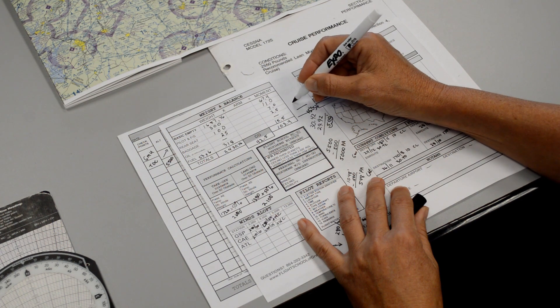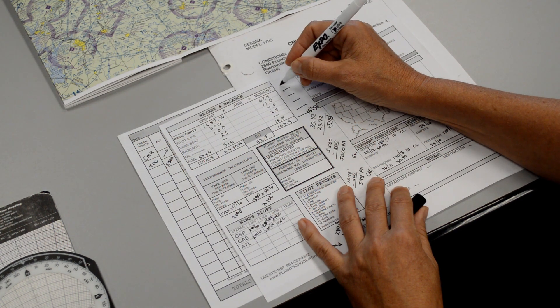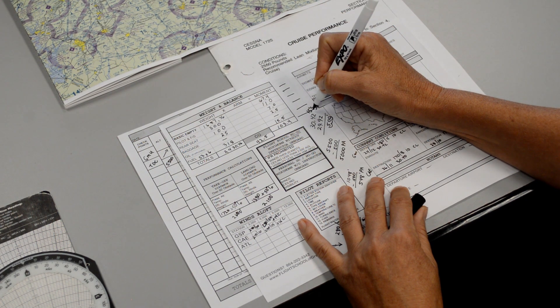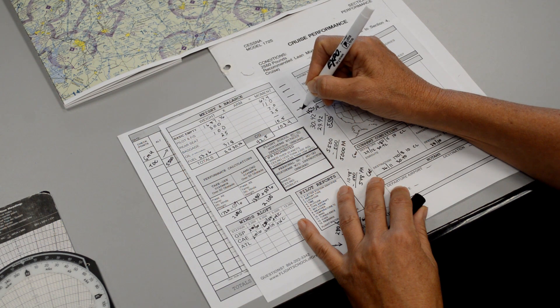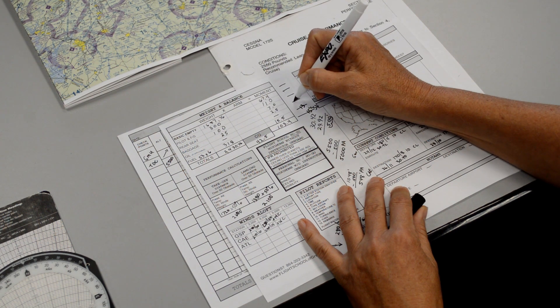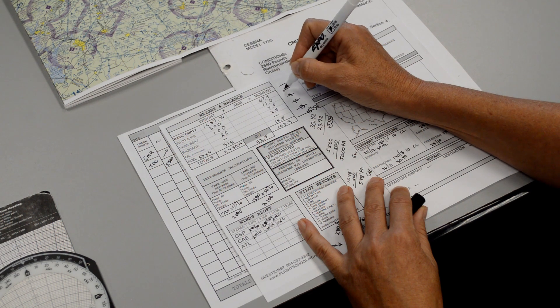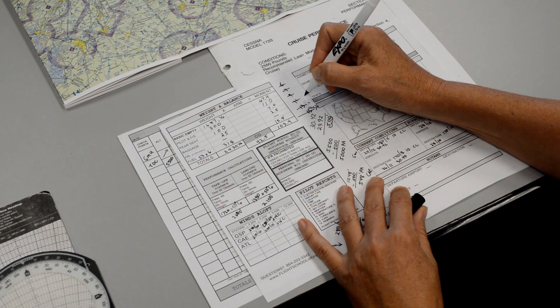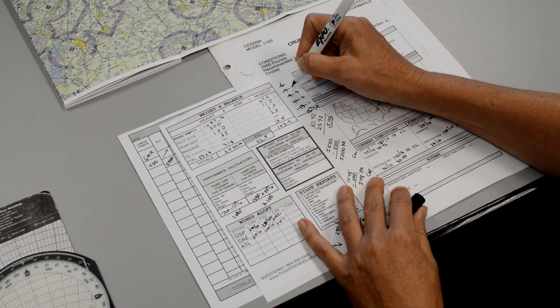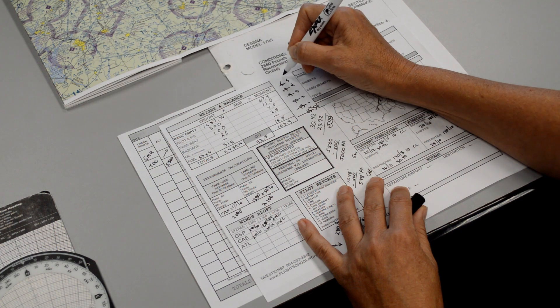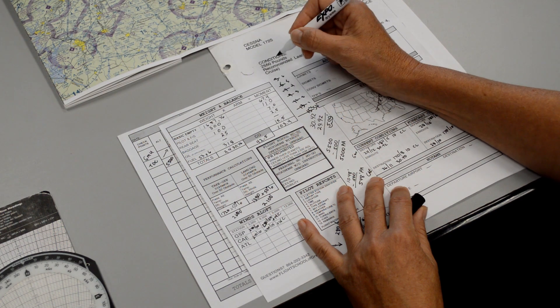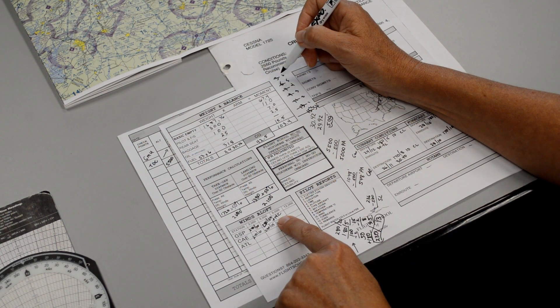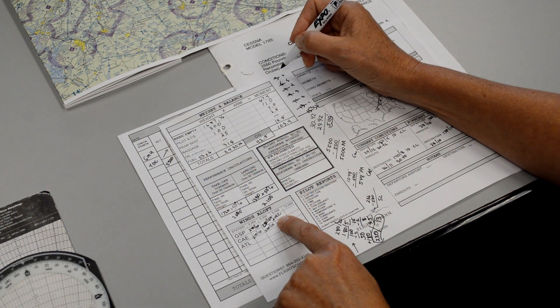For every 1,000 feet we go up, we lose on average 2 degrees per 1,000 feet. So at sea level, the standard temperature would be 15. At 1,000 feet, the temperature would be 13, and then 11, 9, 7, 5. So we've got 1,000 feet, 2,000 feet, 3,000 feet, 4,000 feet, 5,000 feet, and finally 6,000 feet where the temperature should be 3. But the weather briefer told us it was 14.